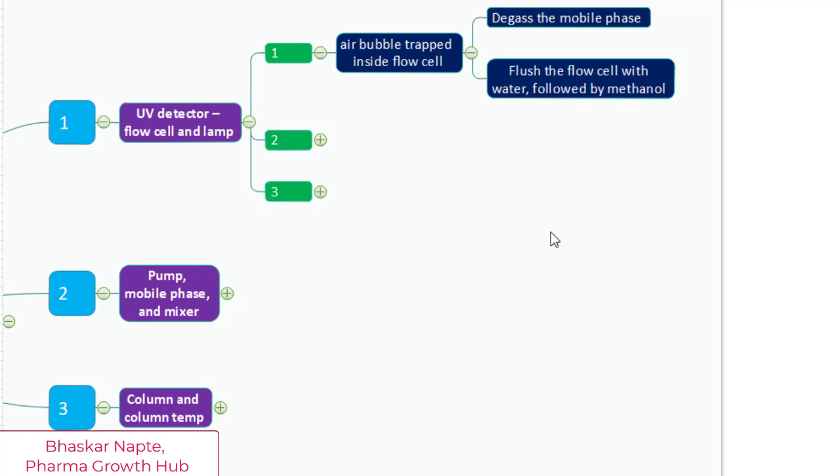Inadequate degassing of the mobile phase can cause air bubbles to form inside the flow cell. The high pressure that keeps bubbles moving at the front of the column can get trapped or released inside the flow cell. For that reason, degassing the mobile phase is very important.